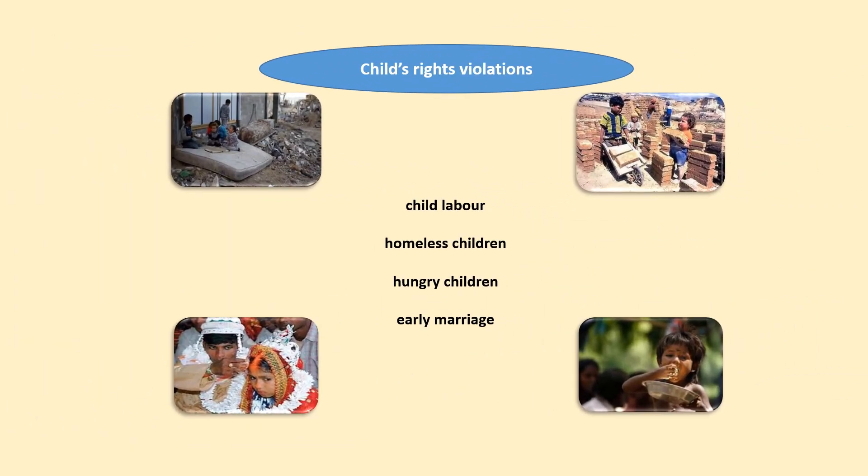As you may have noticed, the video is about child rights and the potential violations these children can be subject to. Now look at the pictures please. What violations of child rights does each represent? Child labor, homeless children, hungry children, early marriage.